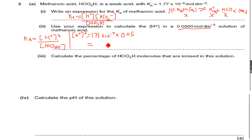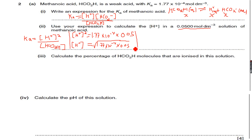We can calculate [H⁺] by taking the square root: 1.77×10⁻⁴ times 0.05. When we simplify this we get 2.97×10⁻³ from the calculator — 2.97×10⁻³ mol/dm³. So this is the concentration of H⁺ ions in solution.